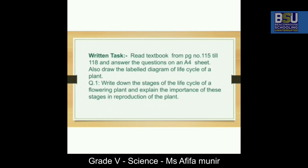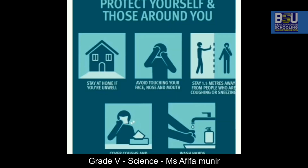Your task for today: read the textbook from page 115 to 118 and answer the questions on an A4 sheet. Also draw a labelled diagram of the life cycle of a plant. Write down the stages of the life cycle of a flowering plant and explain the importance of these stages in the reproduction of the plant.